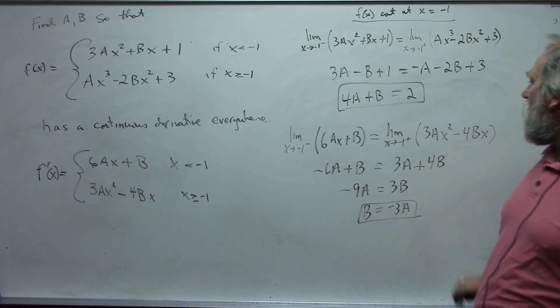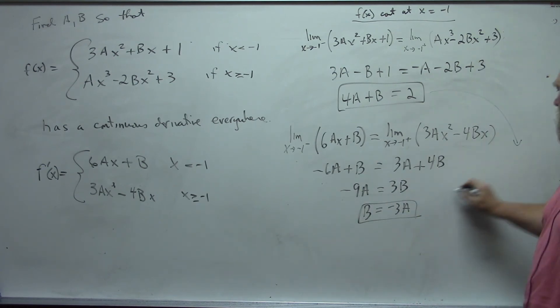And now I will take this system. I have these two equations I have to solve simultaneously. In this case it's set up nicely, just replace b with negative 3a. So I get 4a minus 3a is equal to 2, which means that a equals 2, and so that means that b has to be negative 6. And we have solved.